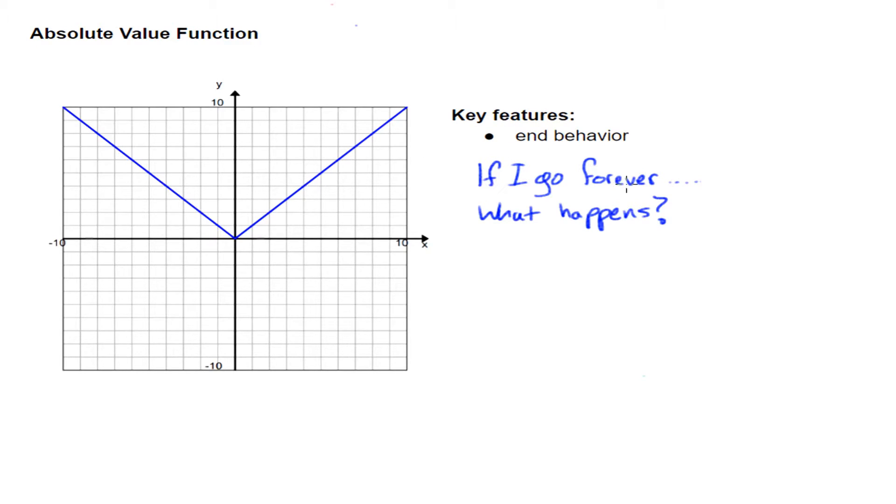End behavior is asking the question, if I go forever, what's going to happen? Let's try and go forever here. Let's go to the end, and what isn't on my graph is an implied arrow. If I think about traveling this way forever, I'm always going up, and I'm always going to the right. Same here. I'm always going up, and I'm always going to the left. So, there's going to be a component that goes forever left and right, and forever up. My end behavior says goes forever left and right, and it goes forever up.